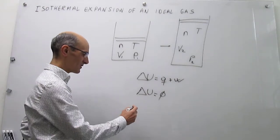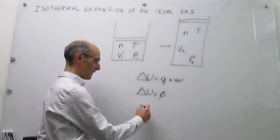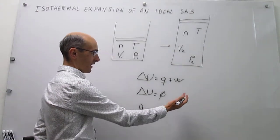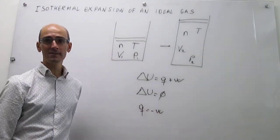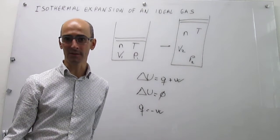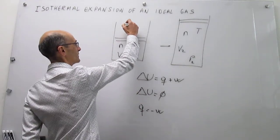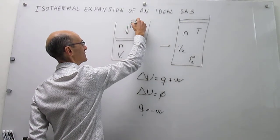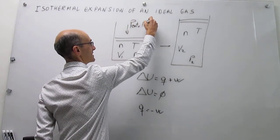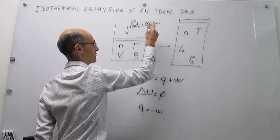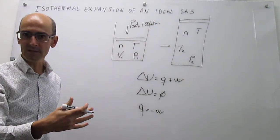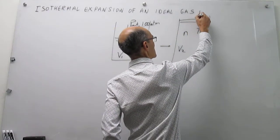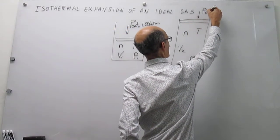So as long as the expansion is isothermal and this is an ideal gas, the change in internal energy is zero. That means the other two properties are straightforward to calculate: heat is equal to minus work. The work is going to depend on how you carry out this expansion. Suppose that we're doing this against a constant external pressure of one atmosphere. This could be a reversible process or a different external pressure, but in this case it's going to be a constant external pressure of one atmosphere.